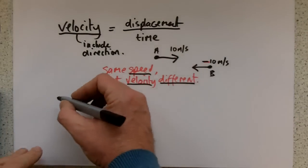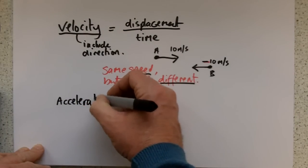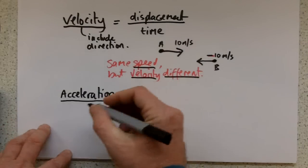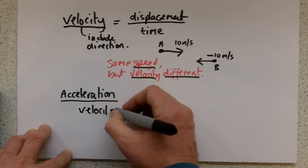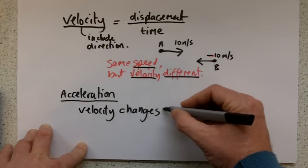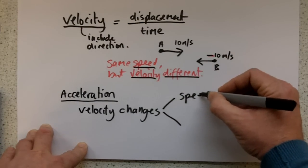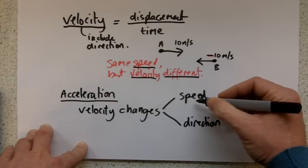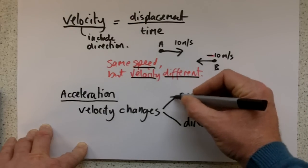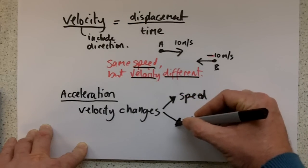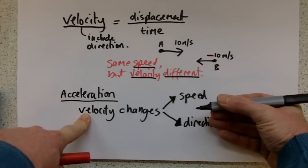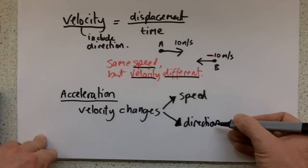Then we're going to look at acceleration. Acceleration is when velocity changes. If the velocity changes in an object, that means acceleration is taking place. Because velocity includes direction and speed, there are two ways to accelerate: you can accelerate by changing speed — speeding up or slowing down — or you can accelerate by changing direction. If I speed up, I'm accelerating. If I slow down, I'm also accelerating — negatively, or against the direction I'm going. If I change direction, I'm also accelerating.